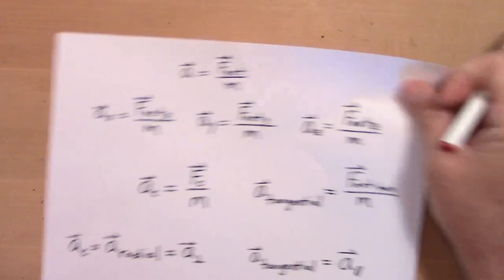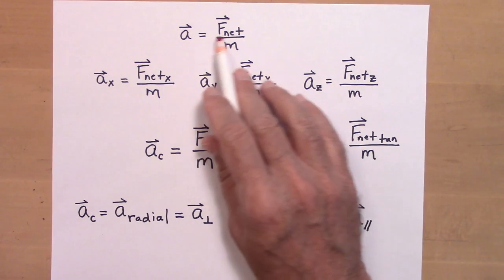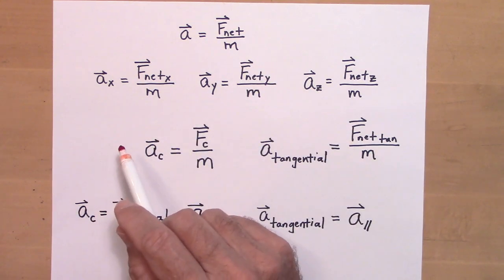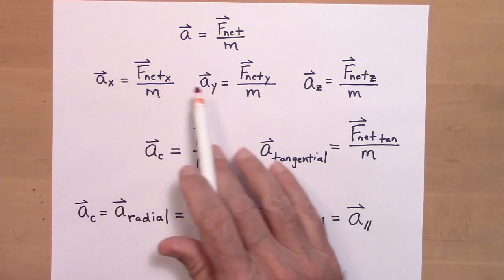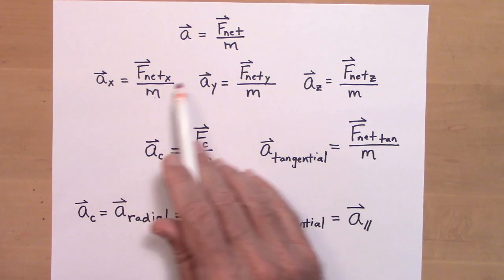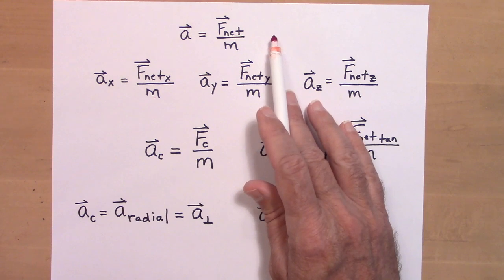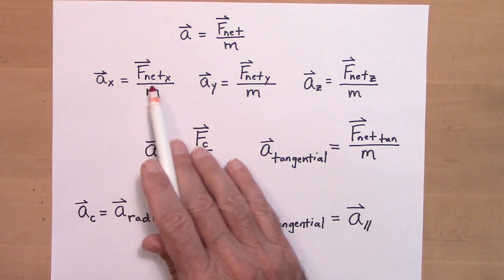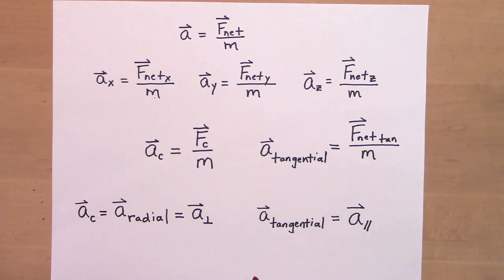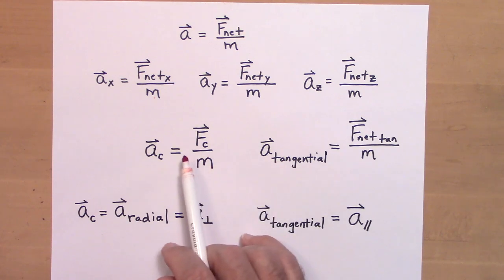How do you handle that mathematically? It's the same way we do all Newton's Second Law problems. Normally we break acceleration into X, Y, and Z directions. For circular motion where something is speeding up or slowing down, we instead break it into a tangential direction and a radial direction.